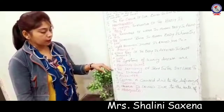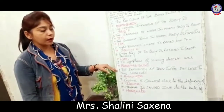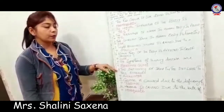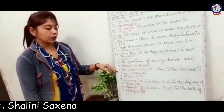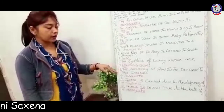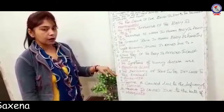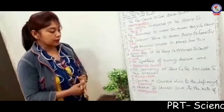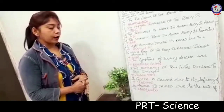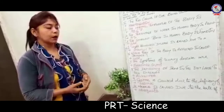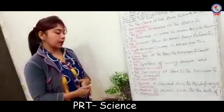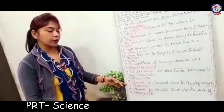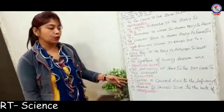Eighth one: the deficiency of iron in the diet leads to anemia. हमारी body में अगर iron की कमी हो जाए तो हमें anemia हो जाती है. Ninth one: goiter is caused due to deficiency of iodine. अगर हमारी body में iodine की कमी हो जाती है तो हमको goiter disease हो जाती है.